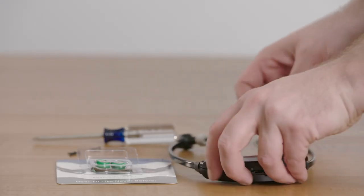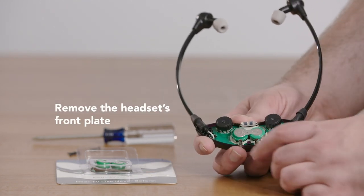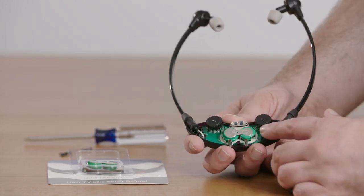Now once the screws are unscrewed we can remove the front plate from the headset and take a look on the inside. The battery goes into the circuit board here on the back half.